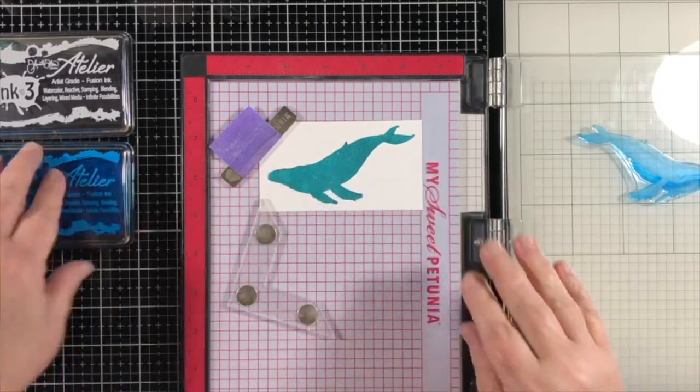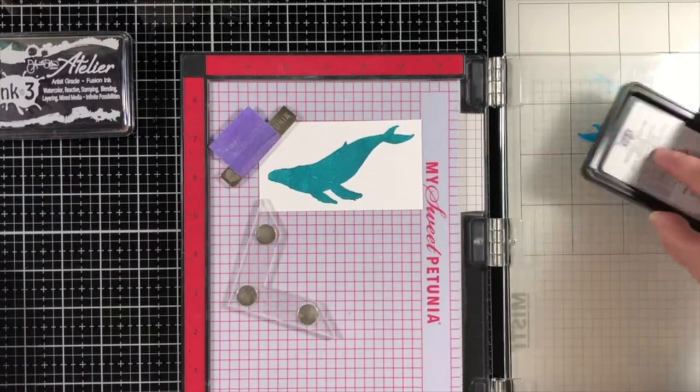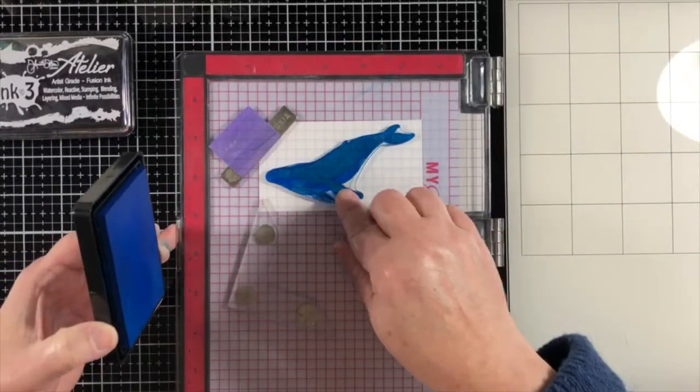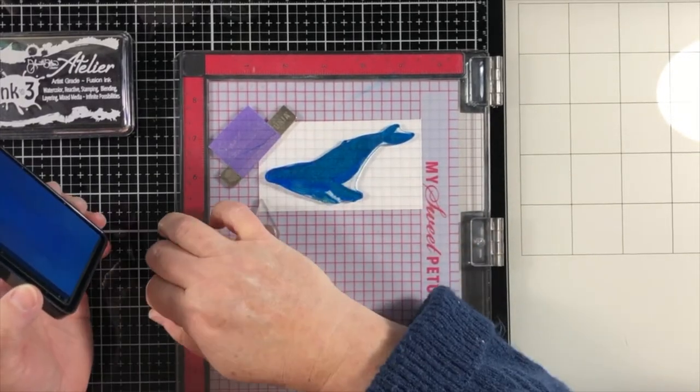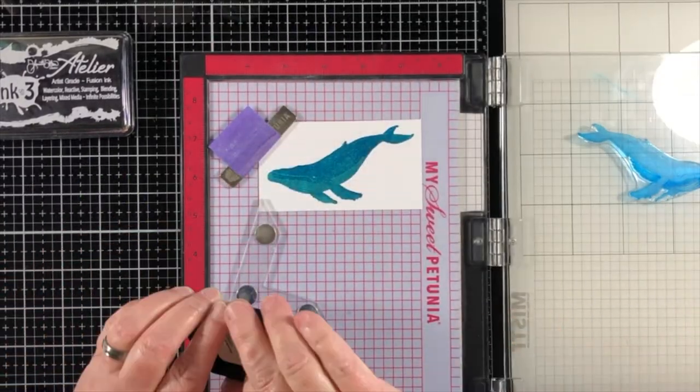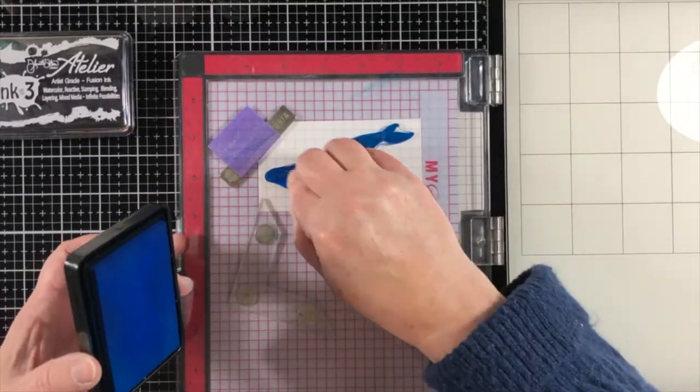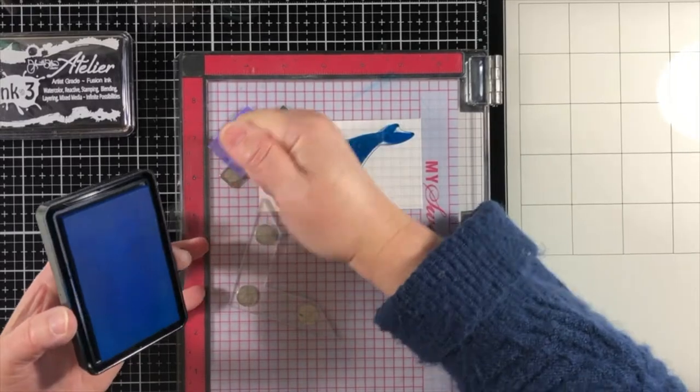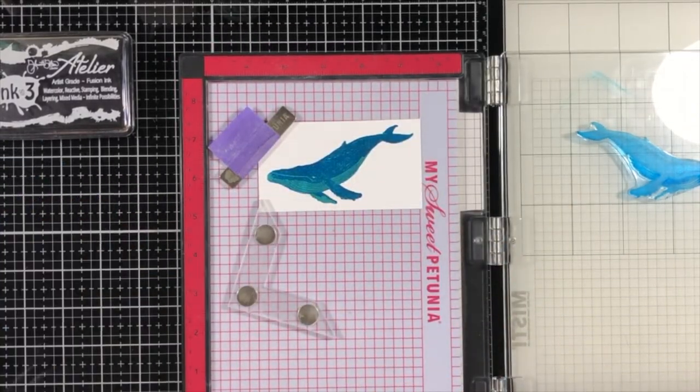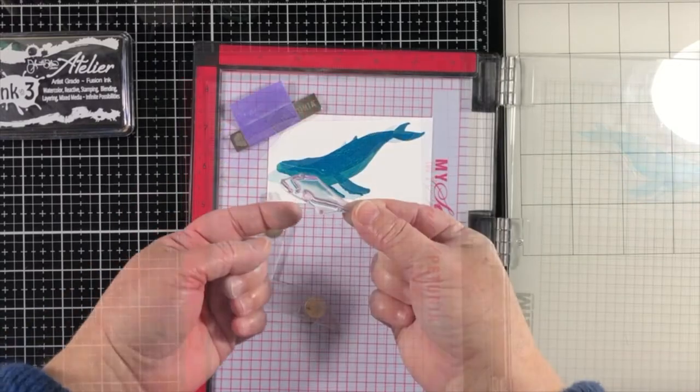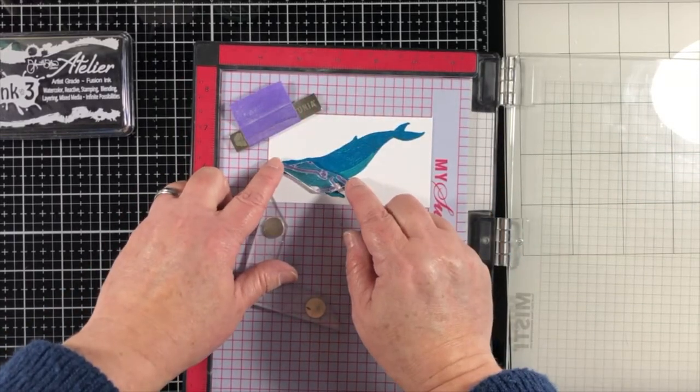So if you have the Atelier inks in your stash from ink on three, then you don't have to just use them for water coloring or use them for single stamping, you can use them for layered stamps as well. So the first image of the whale I stamped in Trinity teal. And that was my lightest color. And now I'm using the peacock blue, which is going to match my background that I water colored. And I'm stamping that two times, I really want to that dark blue to show up on the whale.